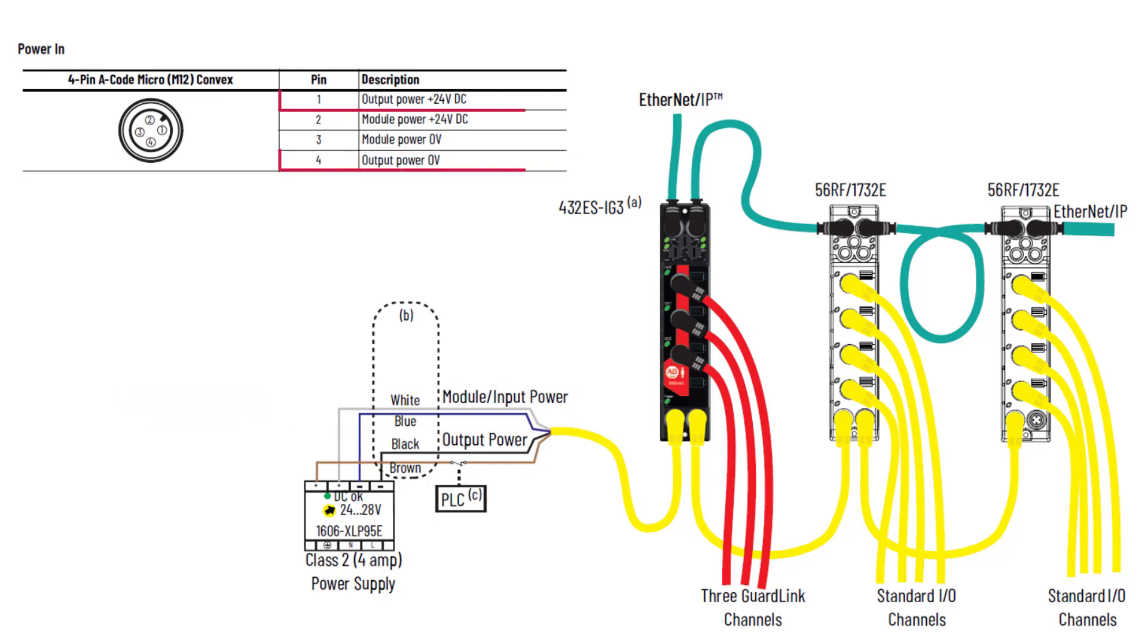The output power on pins 1 and 4, or the brown and black wire of a typical power cable, is not required for this module but passed to the next module if present. This wiring convention follows other on-machine I.O. products, but may be different from some sensor and component power cable wiring.